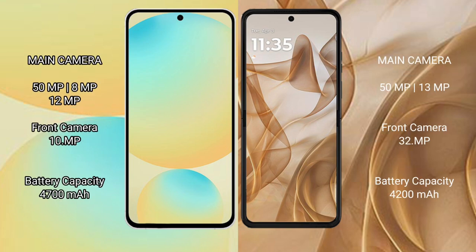The Samsung Galaxy S24 FE features a triple camera setup: 50MP main plus 8MP plus 12MP, with a 10MP front camera. The Motorola Razr 50 has a dual camera setup: 50MP main plus 13MP, with a 32MP front camera.